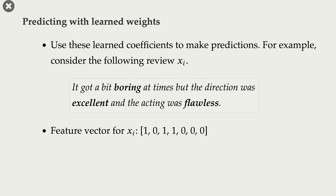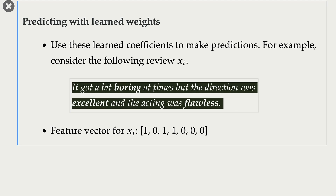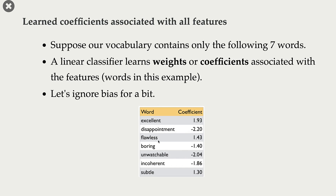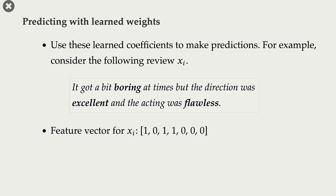Now, using this information, how do we make predictions? For now, just ignore the bias term, or imagine that the model has learned a bias of zero. This is our new review: 'It got a bit boring at times, but the direction was excellent, and the acting was flawless.' How do we make predictions for this new movie review? First, we need to encode it. We have seven words in our vocabulary, so our feature vector has seven elements. The words 'boring,' 'excellent,' and 'flawless' occur in this review, so we have one for these words and zero everywhere else.